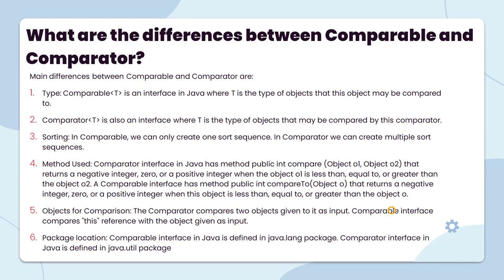Method used in Comparator interface in Java: the Comparator interface has method public compare(Object O1, Object O2), which returns a negative integer, zero, or positive integer. When object O1 is less than, equal to, or greater than object O2. The Comparable interface has method public compareTo(Object), returning negative integer, zero, or positive integer when this object is less than, equal to, or greater than object O2.